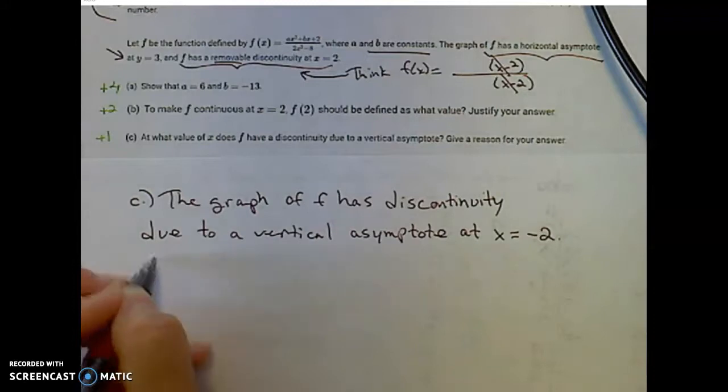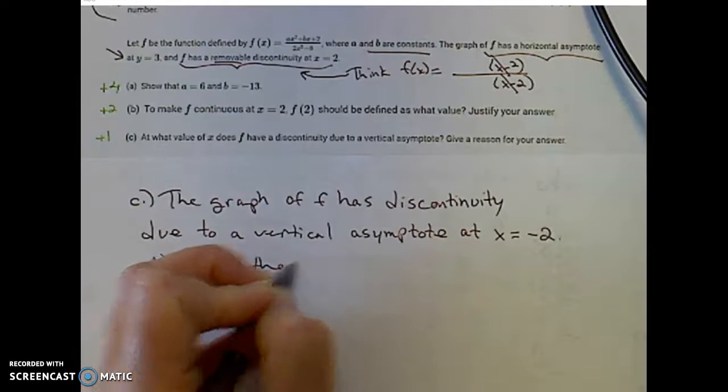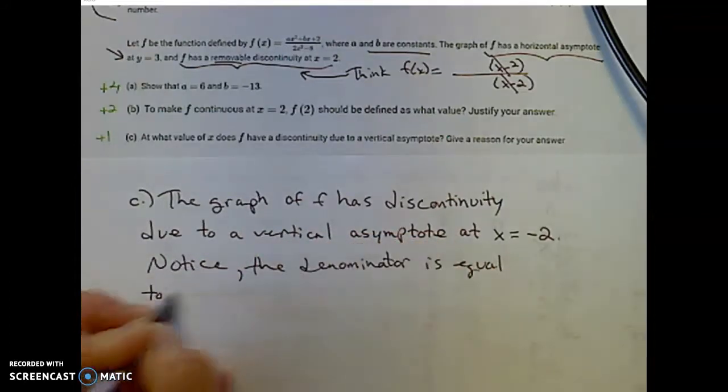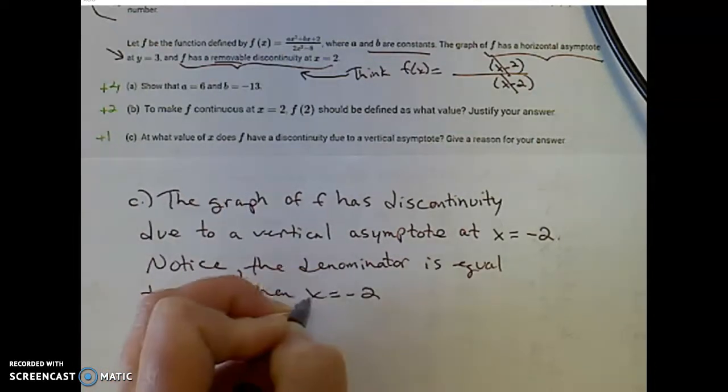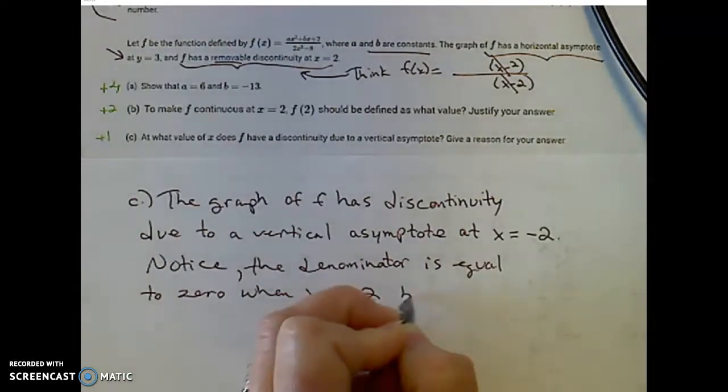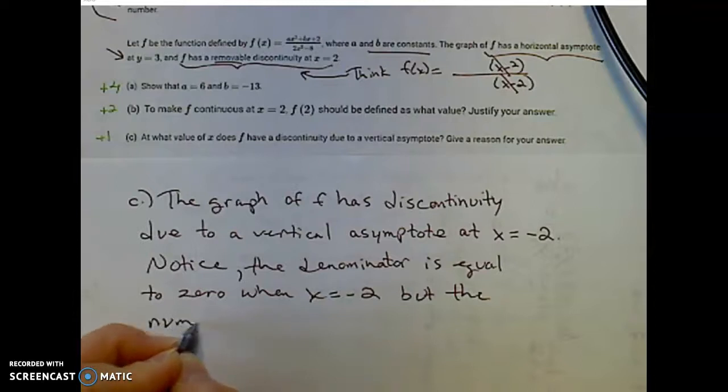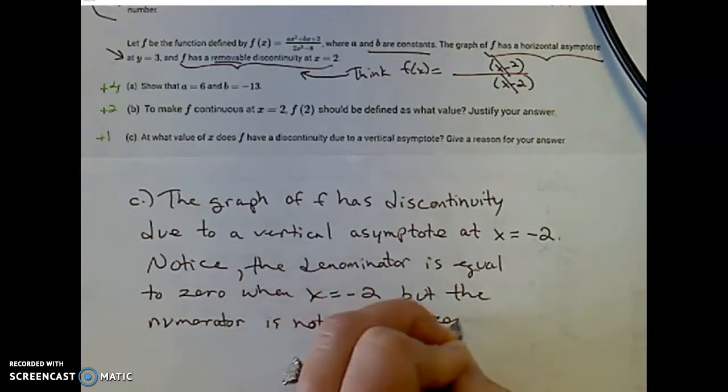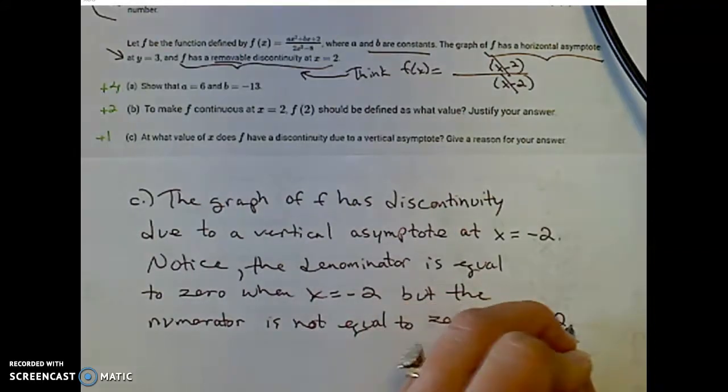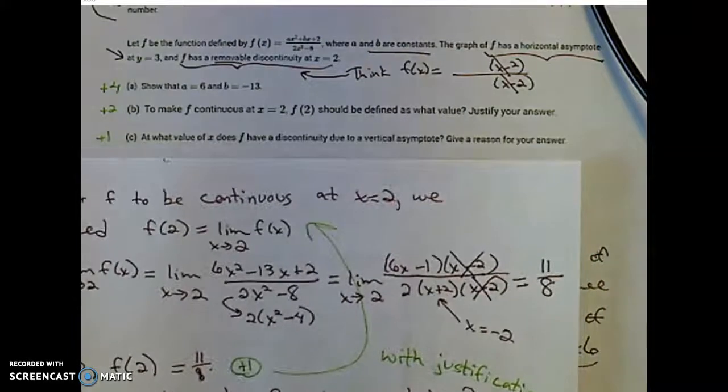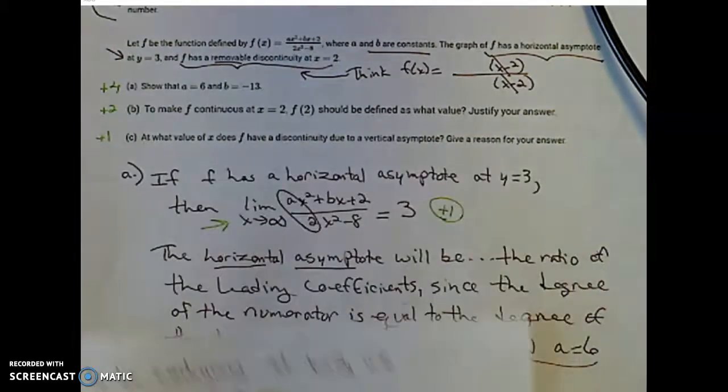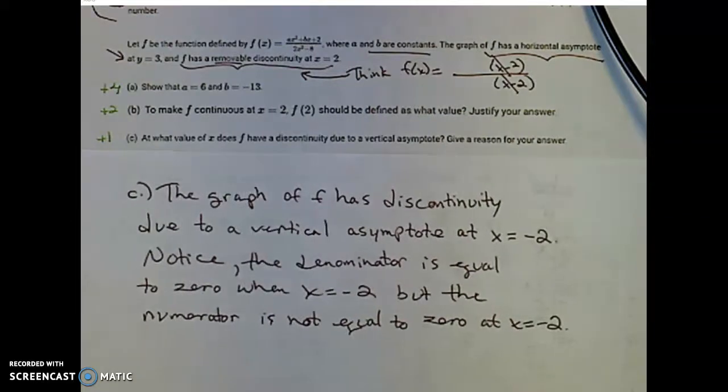Their explanation was, notice, the denominator is equal to 0 when x is equal to negative 2. So that gives me a vertical asymptote. But the numerator is not equal to 0 at x equals negative 2. Let me go back to our previous work in part B. So notice that negative 2 gives me a 0 in the denominator, hence a vertical asymptote, but not a 0 in the numerator. So it's not a removable discontinuity like this one. It is a non-removable discontinuity. And that gives us a vertical asymptote.